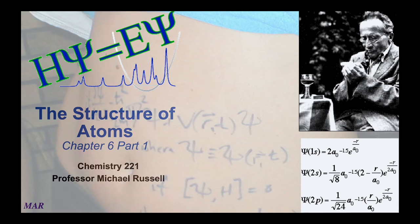Welcome to the video lecture for Chapter 6, Part 1, which is the first part of Chapter 6. In this part, we're going to start looking in more detail at the actual structure of atoms, specifically the electrons that circle around the outside. This is by far one of the more interesting chapters of the whole Chem 221 through Chem 223 sequence. This chapter really probably was not where chemists thought chemistry would go — lots of new developments happened along the way.